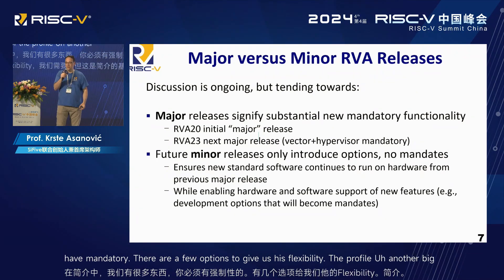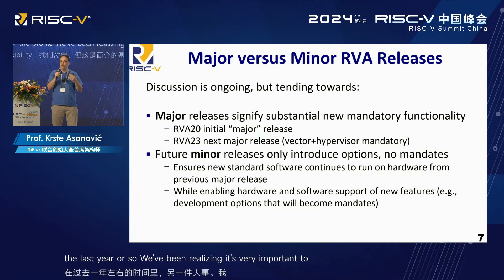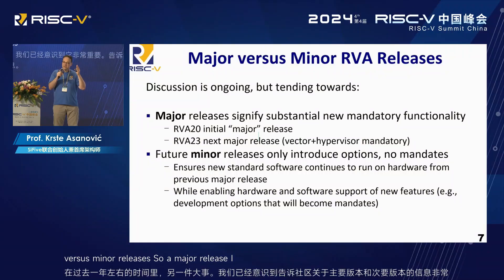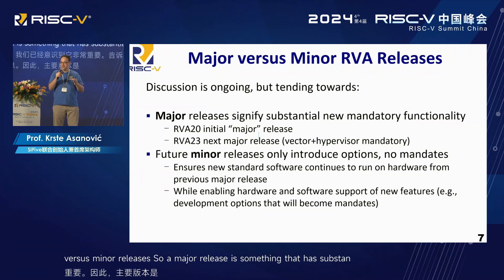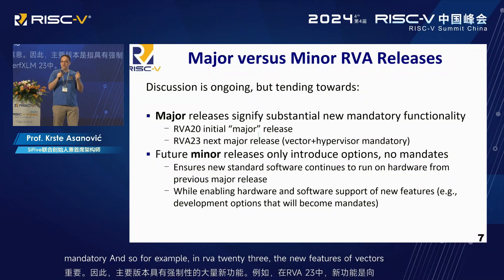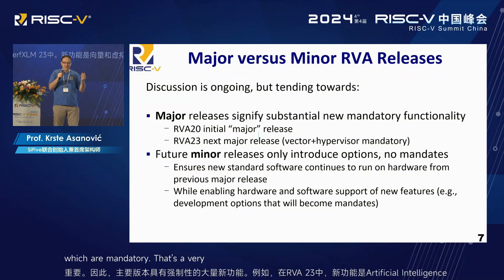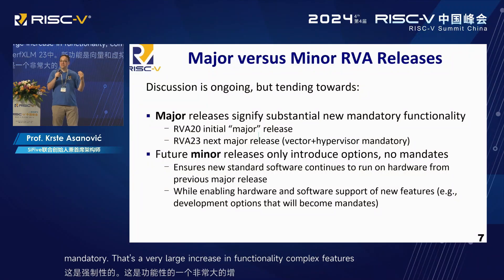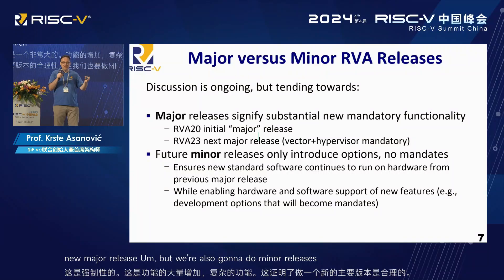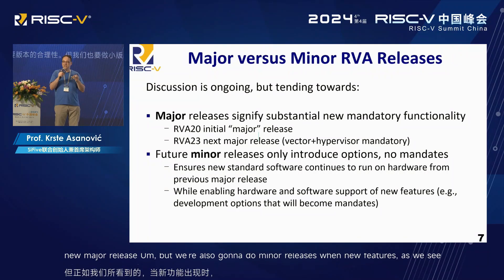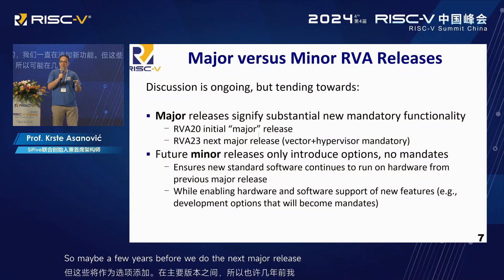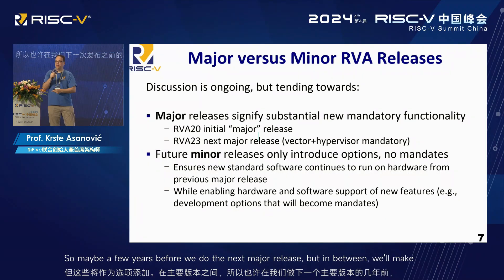Over the last year or so, we've been realizing it's very important to tell the community about major versus minor releases. A major release has substantial new functionality that's mandatory — for example, in RVA23, the new mandatory features are vectors and hypervisor, which is a very large increase in functionality and justifies a new major release. We're also going to do minor releases where new features will be added as options in between major releases — maybe a few years before we do the next major release — making everything available as an option in a minor release.